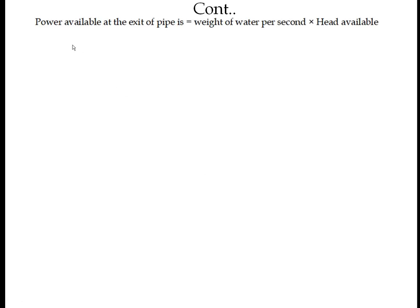Now we find the power available at the exit of the pipe. Power available at the exit equals the weight of water per second multiplied by the head available at the exit of the pipe. Checking units: power is in watts, which is joules per second or Newton·meter per second. Weight per unit time is Newton per second, and head at exit is in meters, so Newton·meter per second — the units balance.